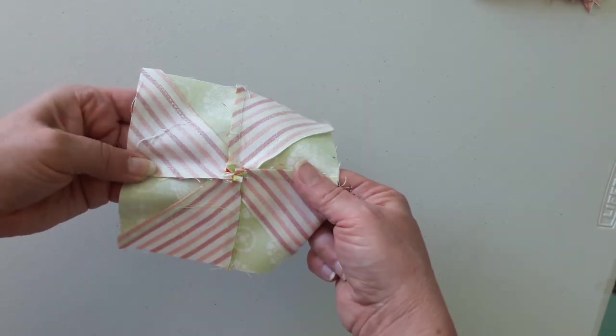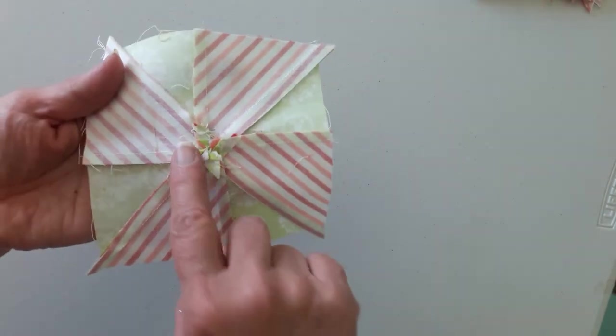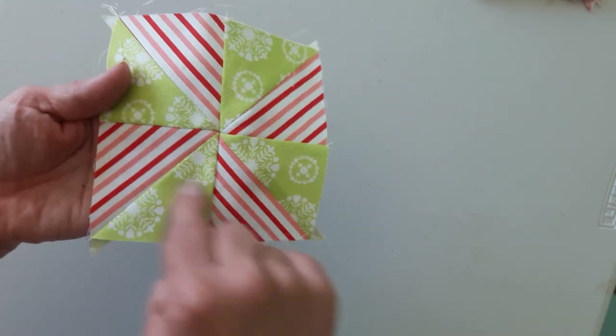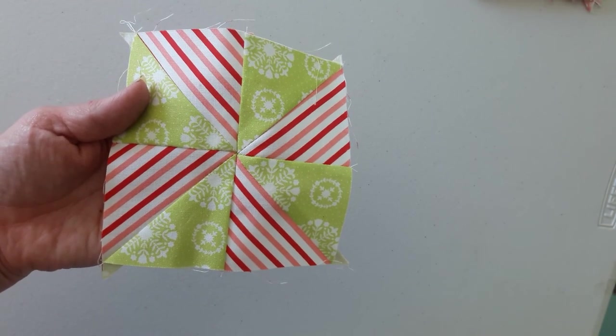And then we're just going to take it to the ironing board and press it. We get this effect, and there's not a lot of bulk right there in the middle, so our pinwheel lays flat. And there you have it. Thanks for watching, see you next time.